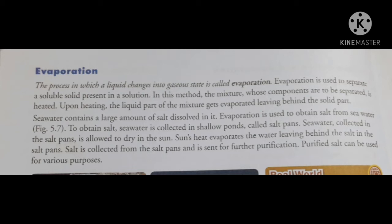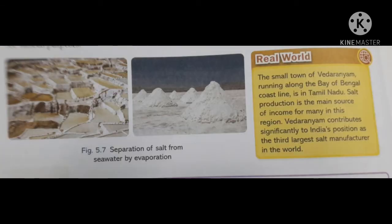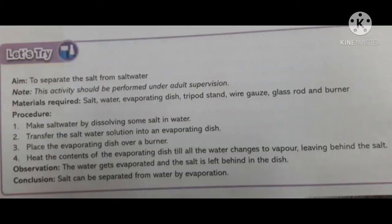You are seeing figure 5.7 — separation of salt from seawater by evaporation. In the first figure, salt pans are seen; in the second, heaps of salt are seen. In the real world, the small town of Vedaranayam, running along the Bay of Bengal coastline in Tamil Nadu, relies on salt production as its main source of income. Vedaranayam contributes significantly to India's position as the third largest salt manufacturer in the world.